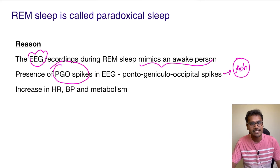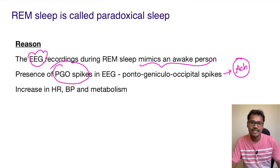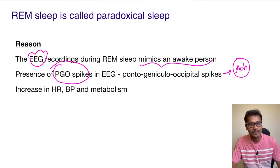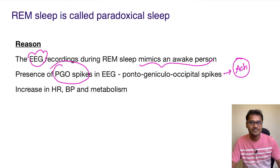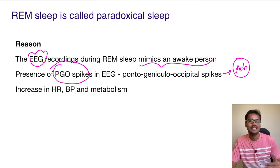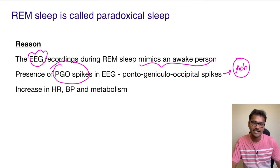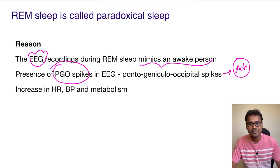The second thing is there is an increase in heart rate, blood pressure, as well as metabolism during REM sleep. Everything looks as if the person is awake, but they are in a real state of sleep. That is the paradox — and that's why REM sleep is also called paradoxical sleep.